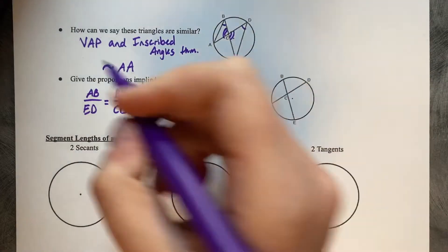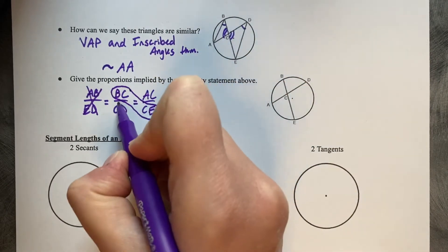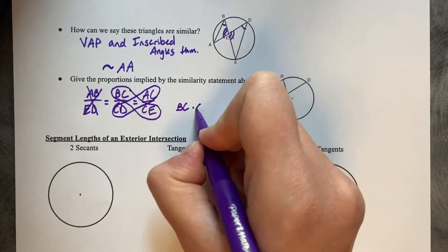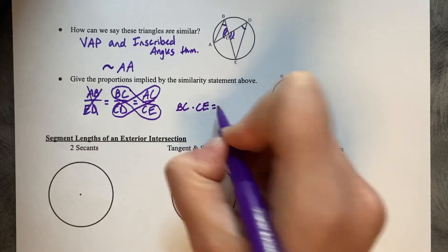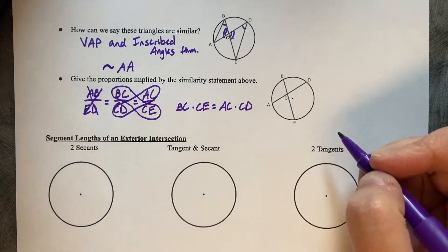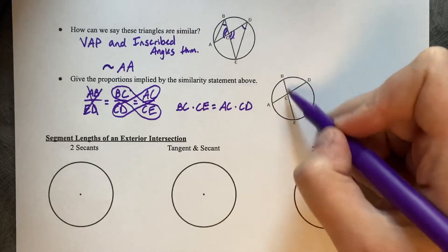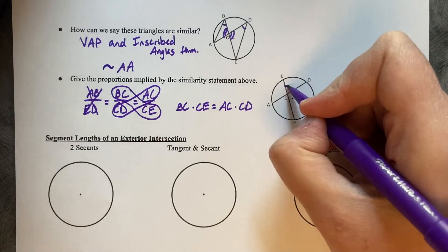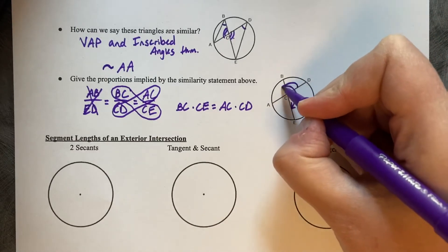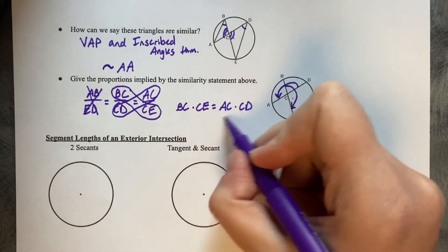And then on the diagram, you can see we're going to take away those two segments, and we're just going to use these two statements to make a linear statement. So we can say that BC times CE is equal to AC times CD. So if we wanted to calculate CD and we knew only the other lengths, you could say BC times CE equals AC times CD. So you're multiplying the two segments together to make your equality statement.